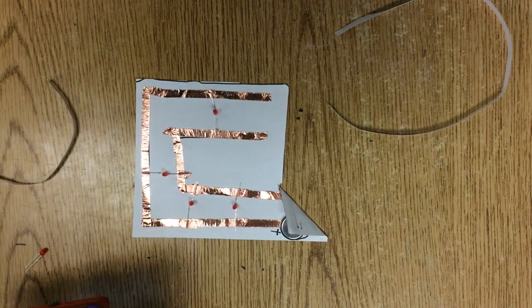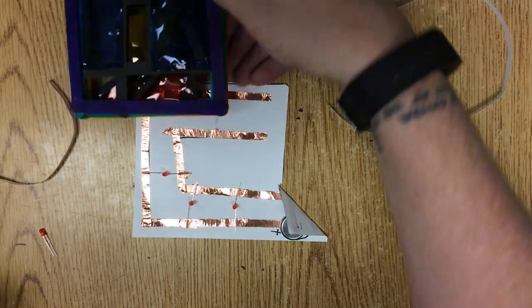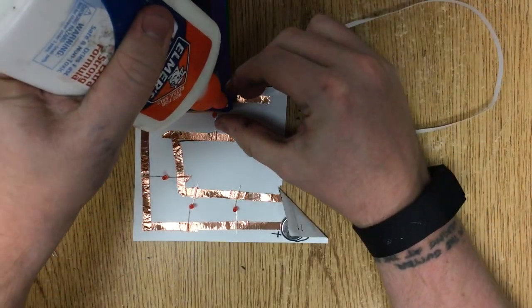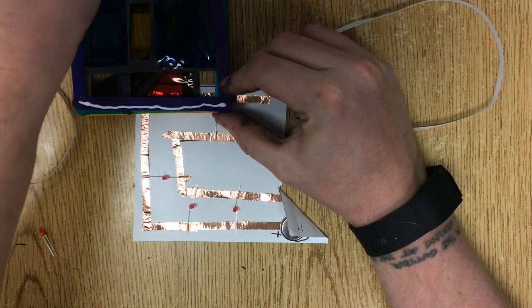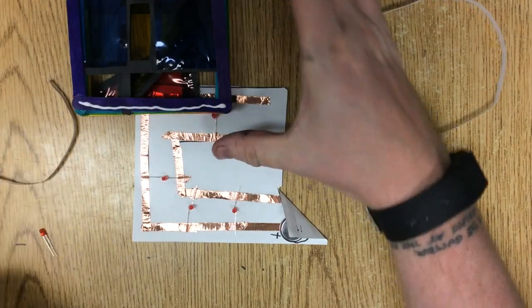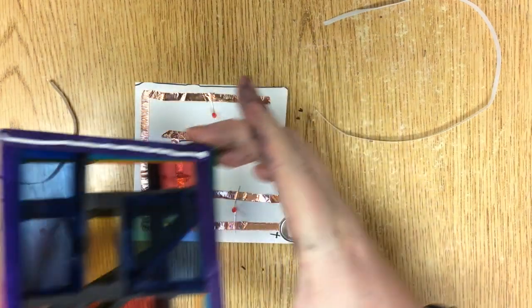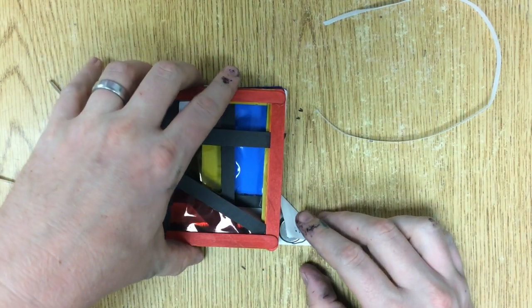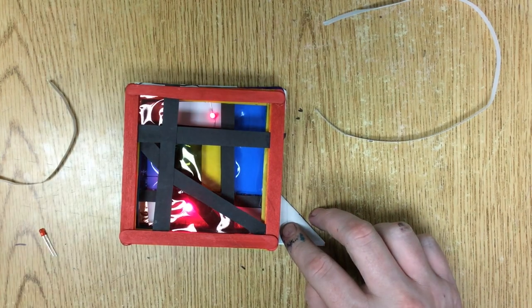Now I just take my project. I'm going to put a line of glue right here. A line of glue right here. I can stick that down. And it lights up.